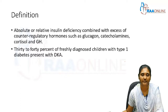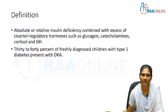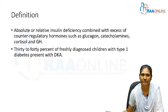By definition, DKA is an absolute or relative insulin deficiency combined with an excess of counter-regulatory hormones such as glucagon, catecholamines, cortisol, and growth hormone. Notably, 30 to 40 percent of newly diagnosed children with type 1 diabetes typically present in the ER setting with DKA.